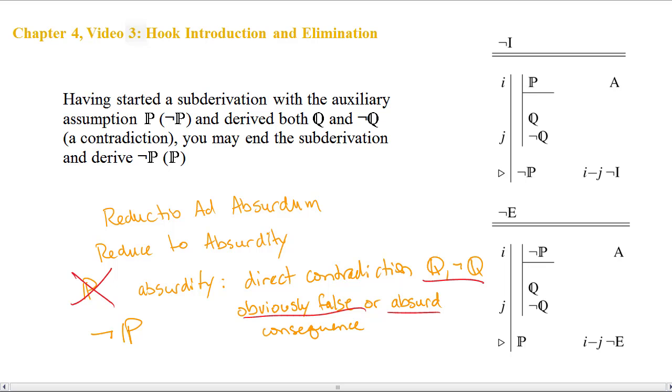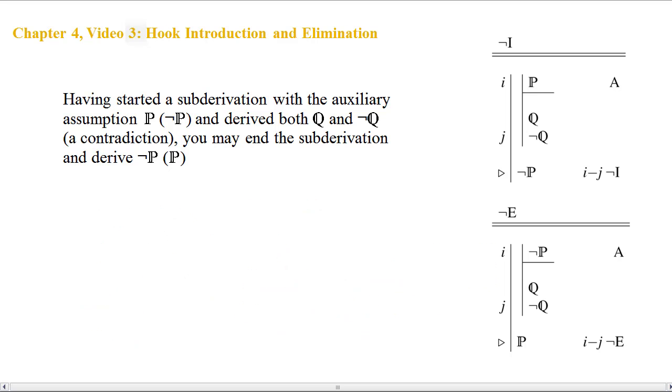In the formal version of this, we require a direct syntactic contradiction, some formula, however simple or complex, and then the direct negation of that formula. So again, focusing on just the hook introduction, the basic idea is we make an auxiliary assumption, demonstrate that it leads to a contradiction, and then that allows us to move out from the subderivation and attach a hook. If P leads to a contradiction, then we must arrive at not P.